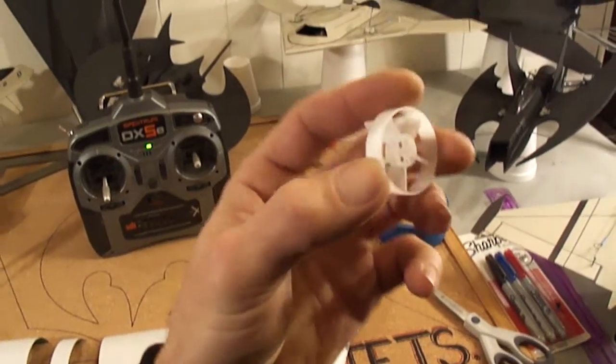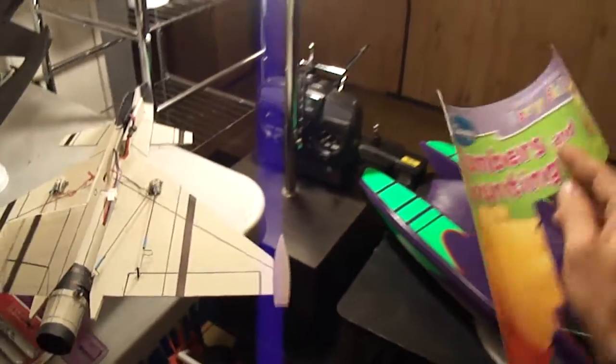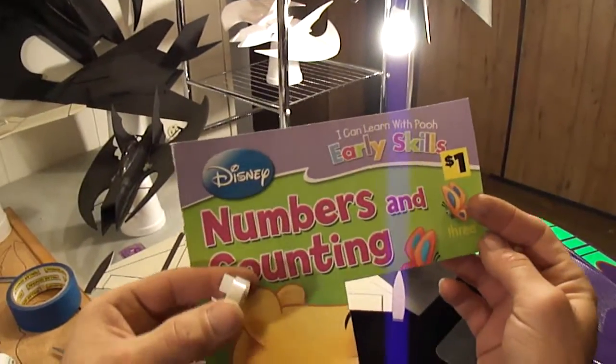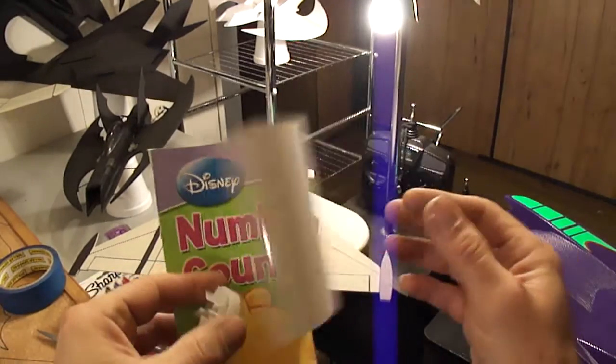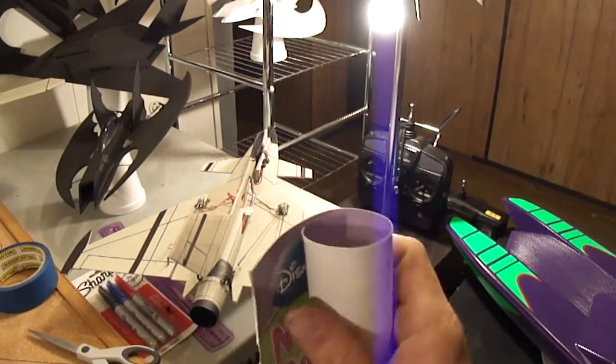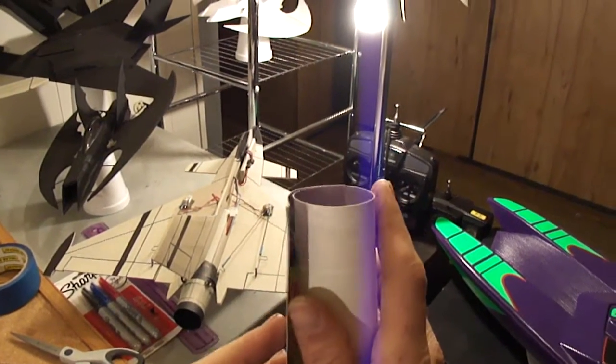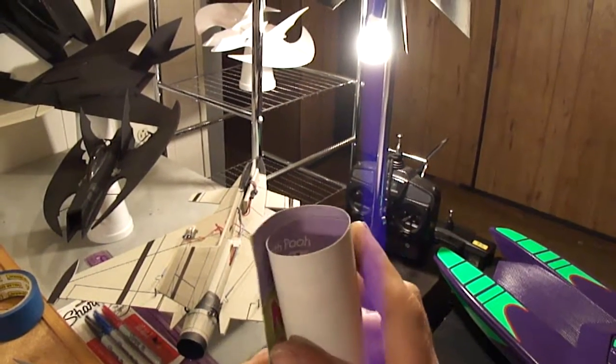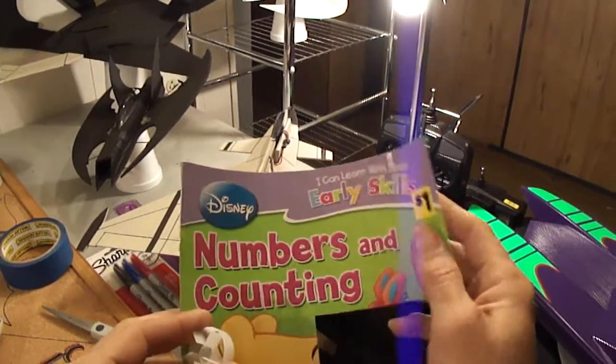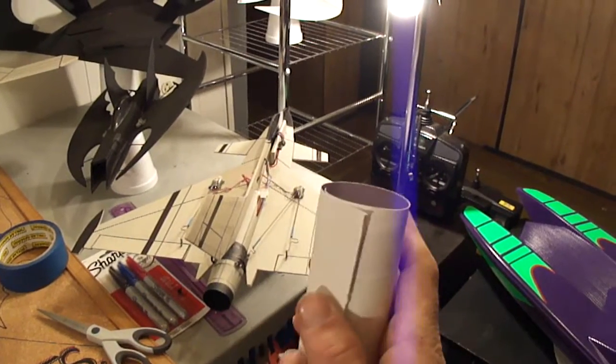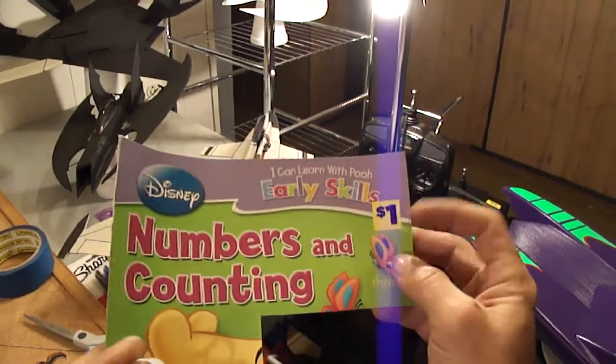So here I got a 30 millimeter fan shroud that I picked up, and again we'll be using the little dollar store kids coloring book cover. This stuff is like as thick as a Christmas card you get at CVS. It's not very thick, it's pretty thin stuff. But again, I got this at the dollar store.